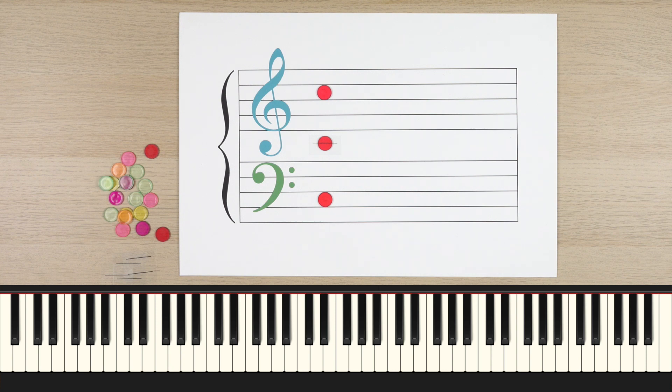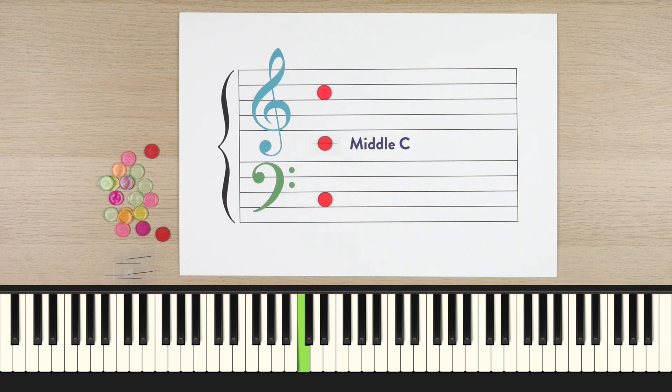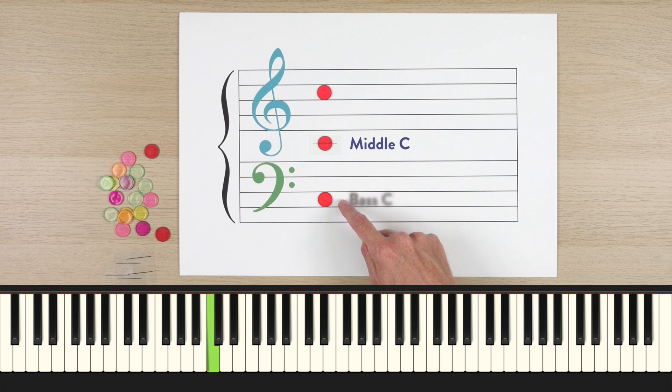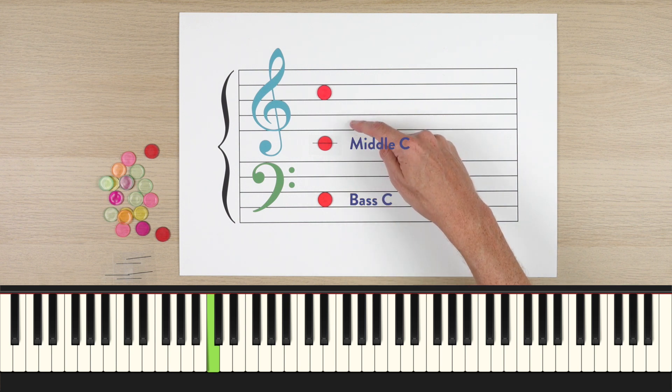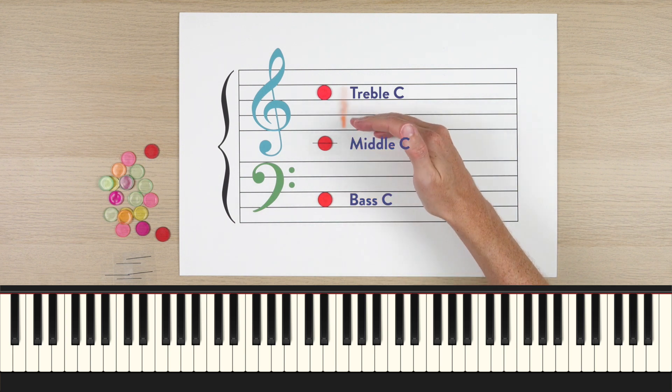Let's review the guide notes we've already learned. We start with the famous middle C. Can you play that on your piano? And then three spaces down we get bass C, and three spaces up we get treble C. So we get three C's, all guide notes. Notice it kind of makes a symmetrical pattern, three spaces up, three spaces down.